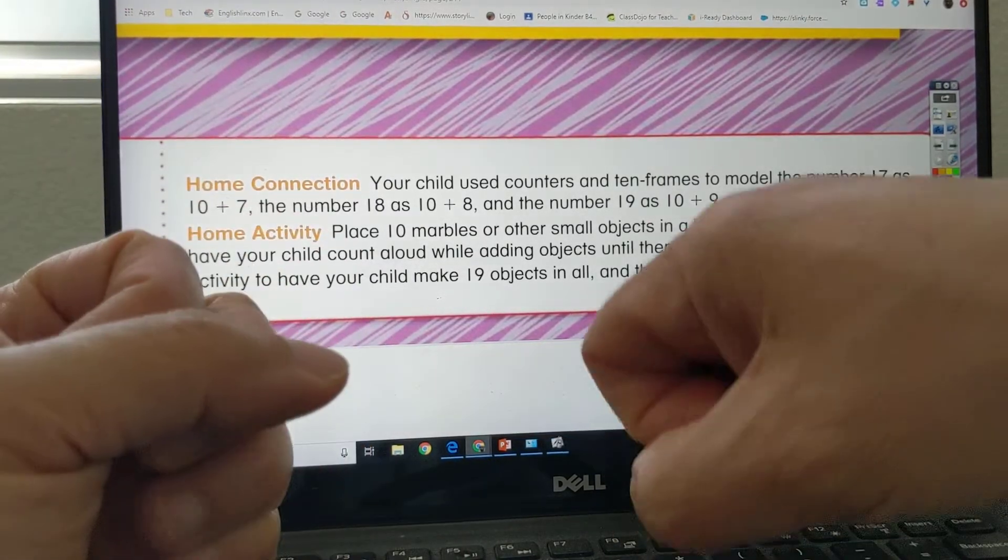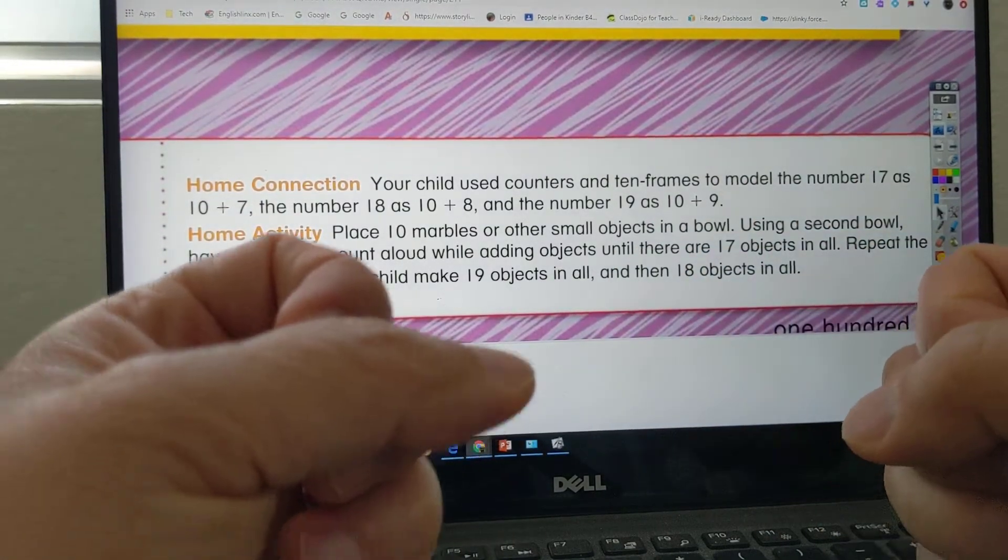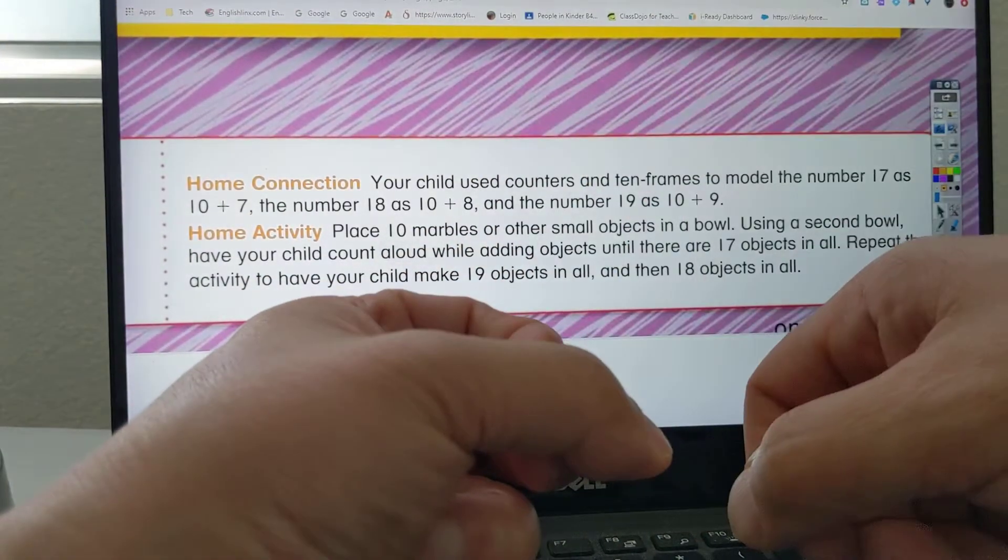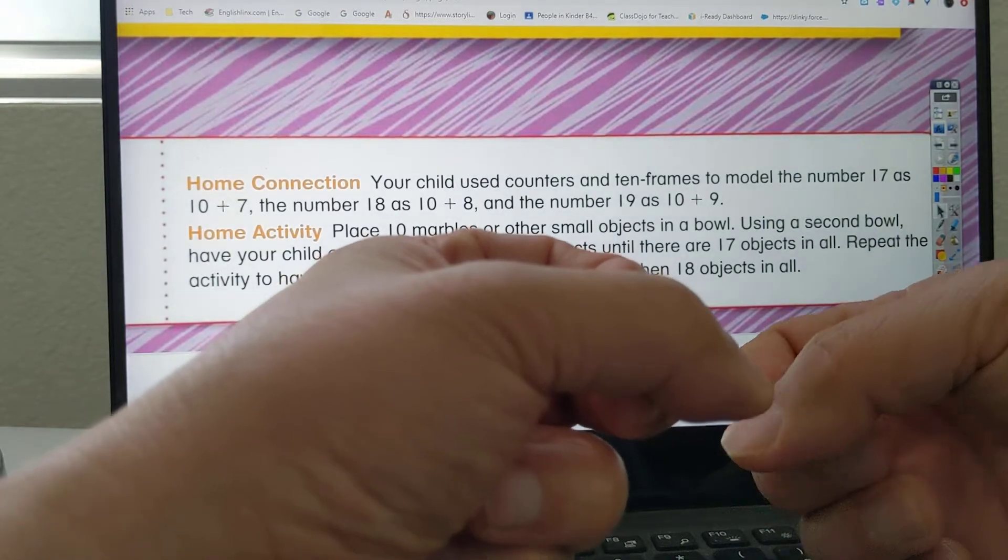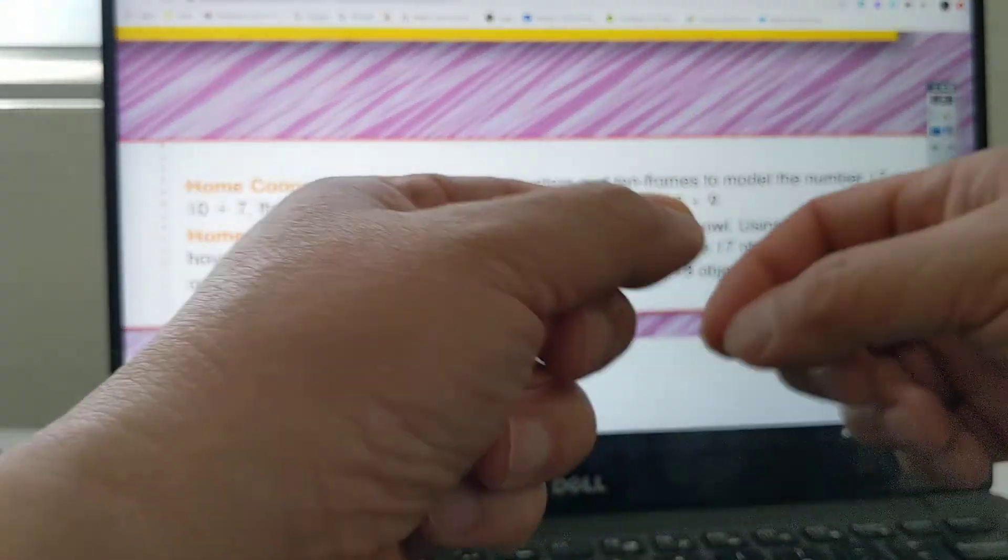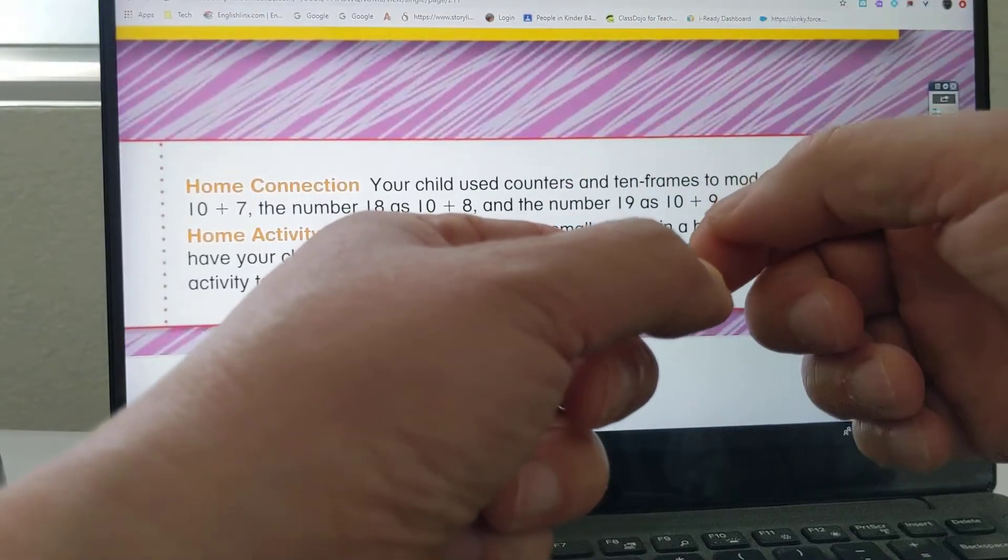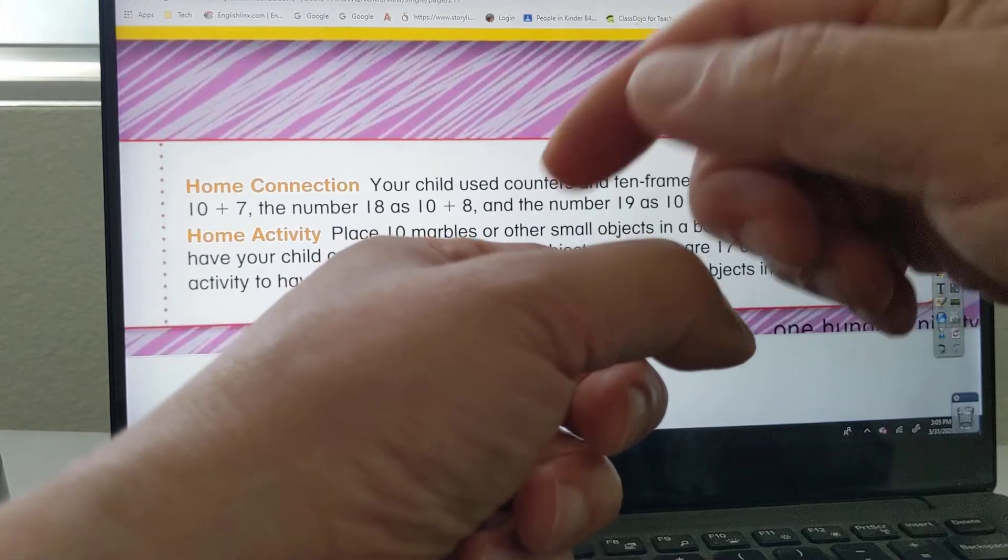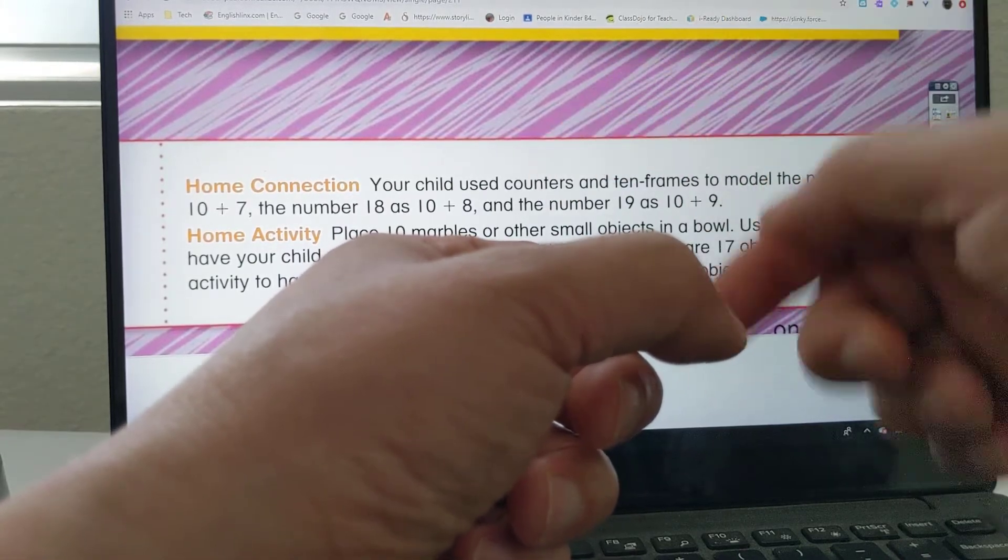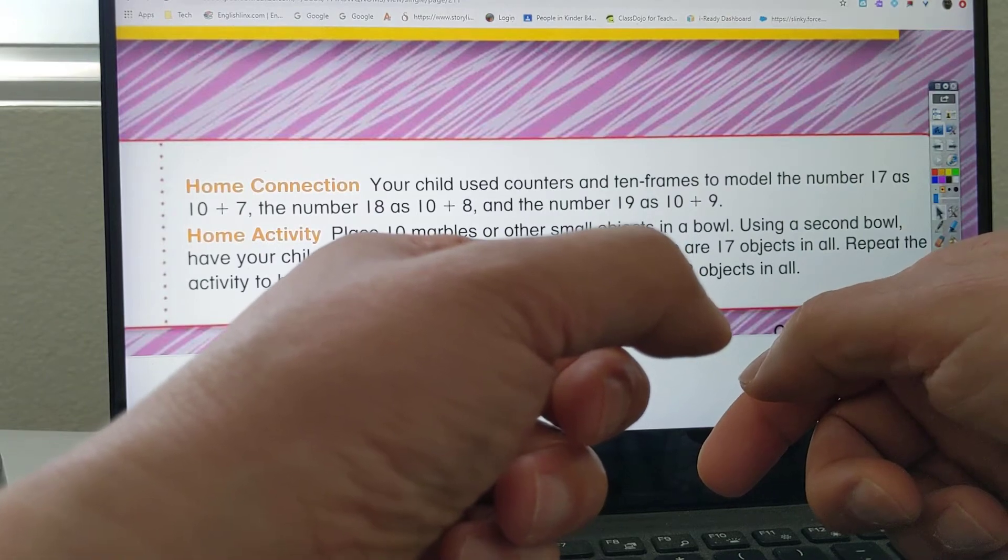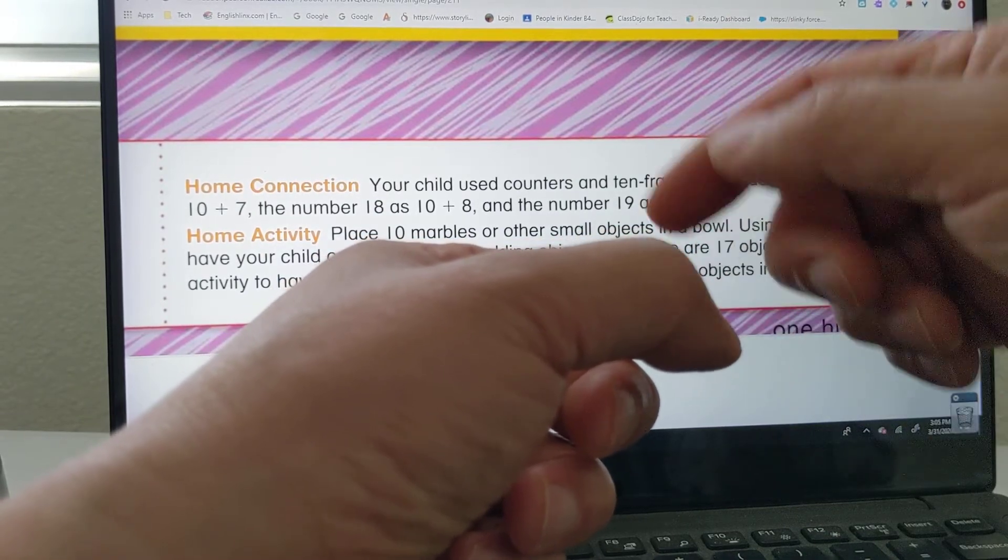So I'll just show you the first one, and then you can do the other ones. So you have 10 marbles, you put 10 objects in this one, and then you could get items from here and place it here. 10, take 1, 11, 12, 13, 14, 15, 16, 17, 18. Oh, the first one is just 17, so just 17.